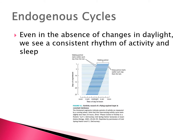Even in the absence of daylight changes, we can see consistent rhythms of activity and sleep. The textbook gives the example of a flying squirrel kept in complete darkness — the dark blue lines show the waking cycle, and you can see it waking slightly earlier every day, so a slightly less than 24-hour clock. Mice on a running wheel in complete dark have a slightly longer, almost 25-hour period. People on a submarine appear to have about a 24.3 to 24.5-hour period. People in Antarctica, where there is sometimes no light, drift off from the 24-hour day cycle and can become irritable.